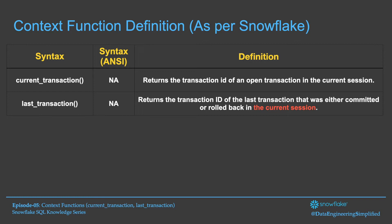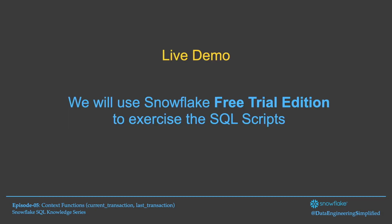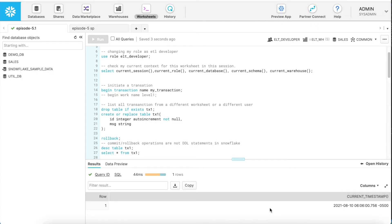We covered in the previous chapter how to use a current session. When we establish a connection with Snowflake, each worksheet is a separate session, and your transactions run within that worksheet. Now let's jump into the live demo — we will use Snowflake free trial edition to exercise the SQL scripts. Here I am using the legacy web UI with a worksheet open, and I'll first switch my role to the ETL developer role.